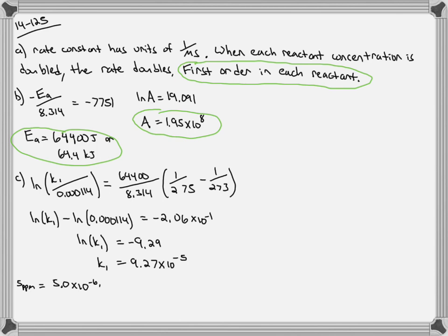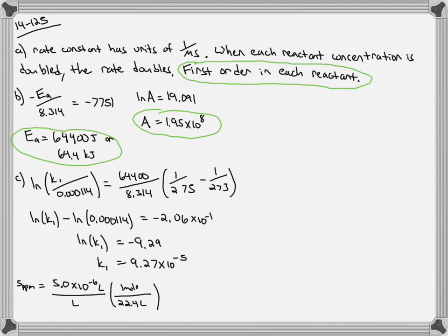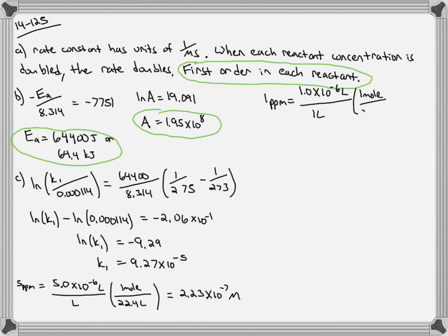Now we need to convert the ppm values into concentrations. Ppm means parts per million, so 5.0 ppm means 5.0 times 10 to the negative 6 liters per 1 liter. Because we are assuming STP, we can convert liters of gas at STP to moles using the conversion factor 22.4 liters per mole. This gives us the molarity corresponding to 5.0 ppm: 2.23 times 10 to the negative 7 M. We do the same for the other reactant, converting ppm into molarity using the definition of ppm and the moles-to-liters relationship at STP.